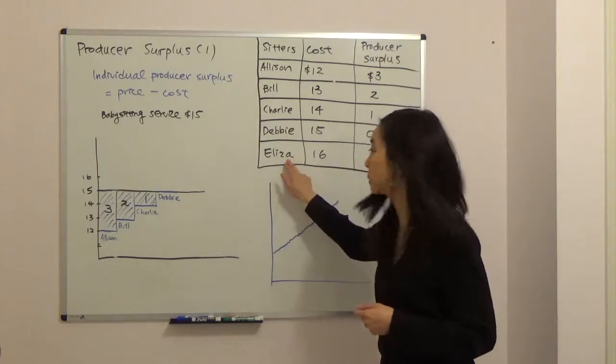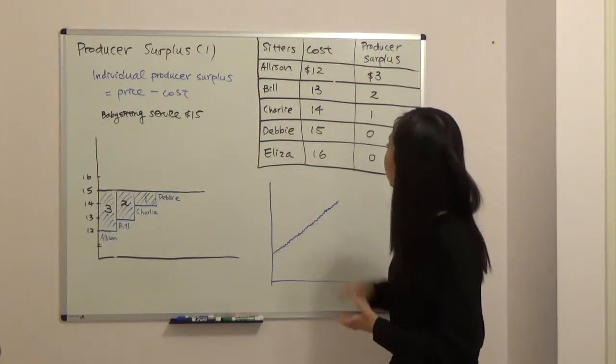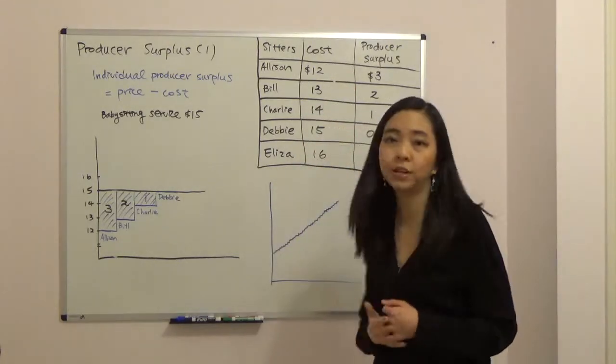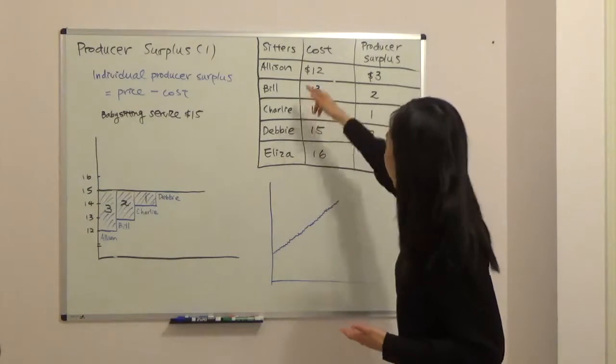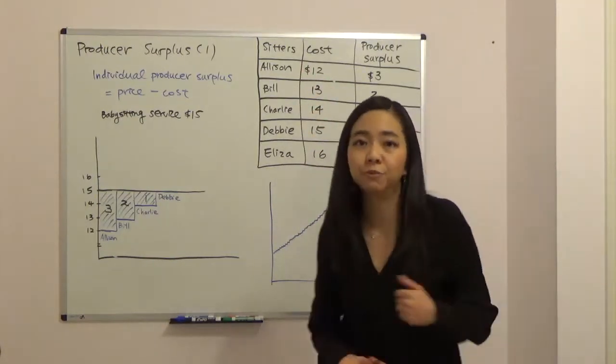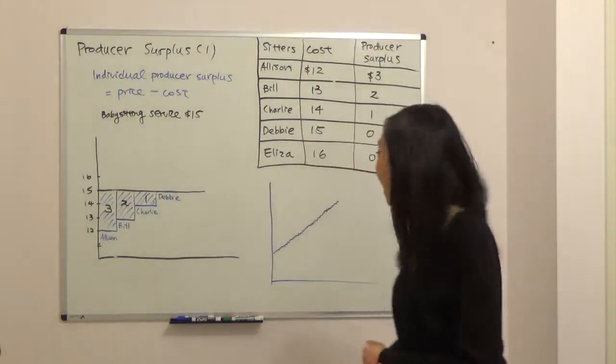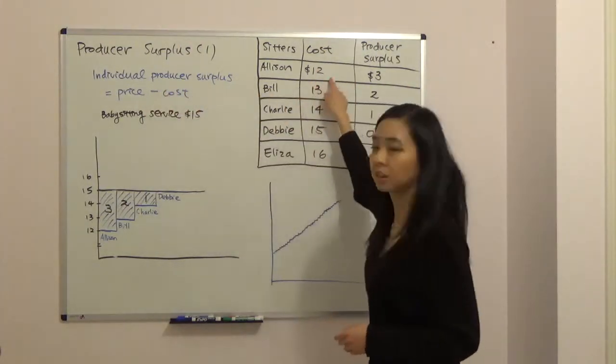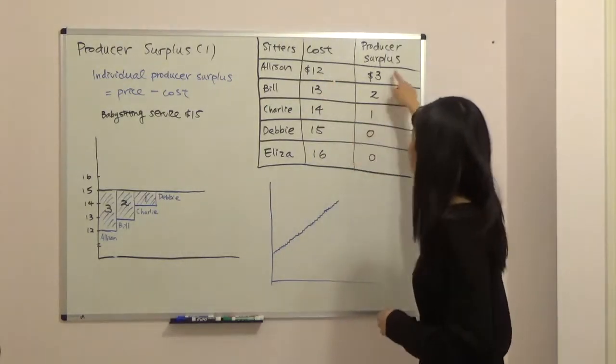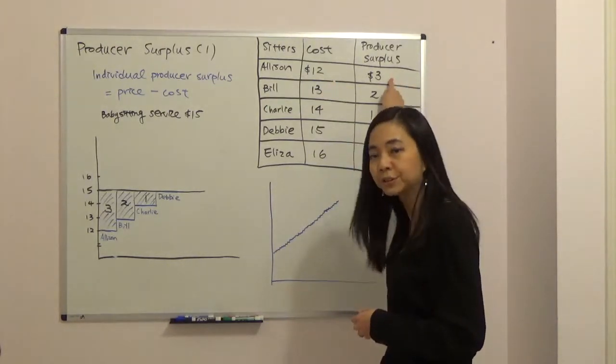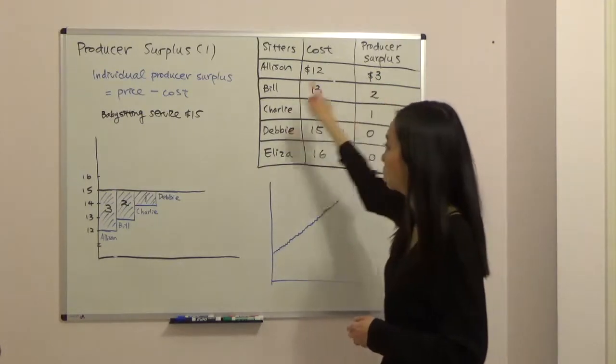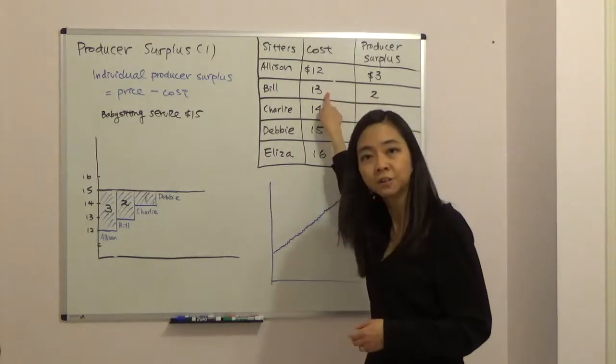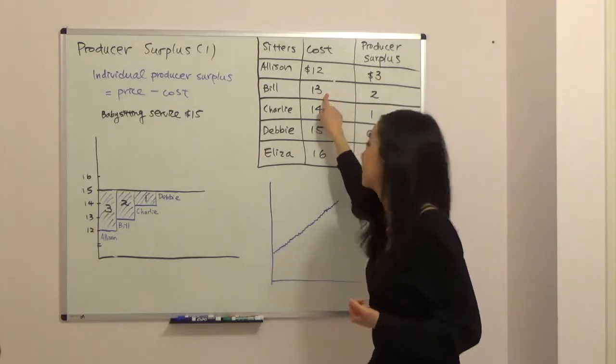From Alison to Debbie, you can see their costs are less than or equal to $15. So Alison, Bill, Charlie and Debbie will provide this babysitting service. Alison's producer surplus equals price $15 minus the cost $12, so Alison's producer surplus is $3. Bill's producer surplus equals price $15 minus Bill's cost which is $13, so Bill's producer surplus is $2 and so on and so forth.